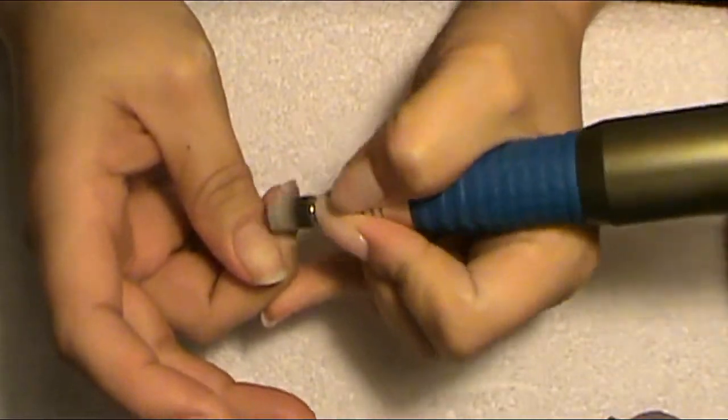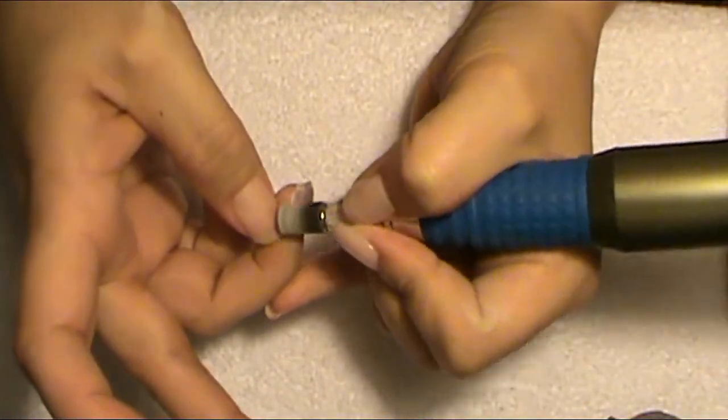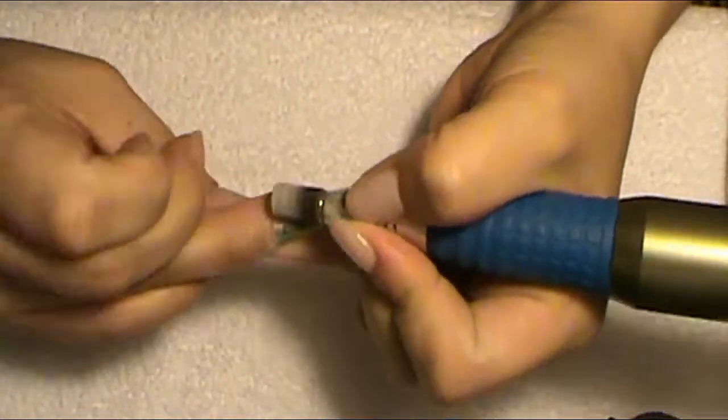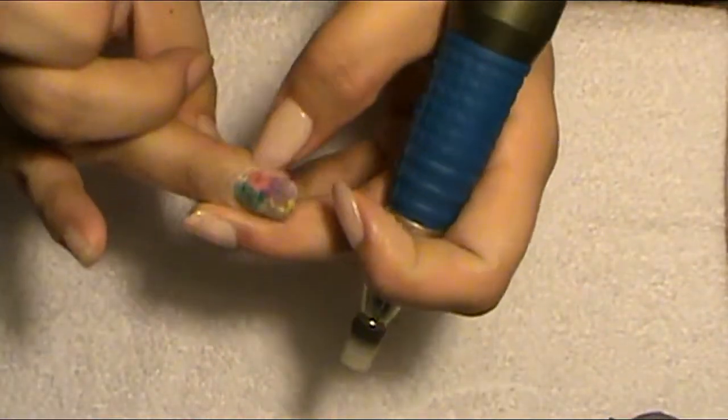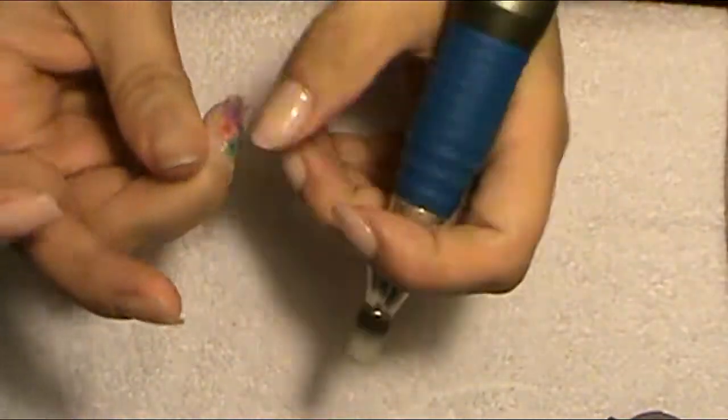And also, obviously as you can see, I'm using my e-file just to get, just so there's no big lump or anything like towards the cuticle if I went a little bit thick with the gel or if it ran. So an e-file is always nice to have on hand.